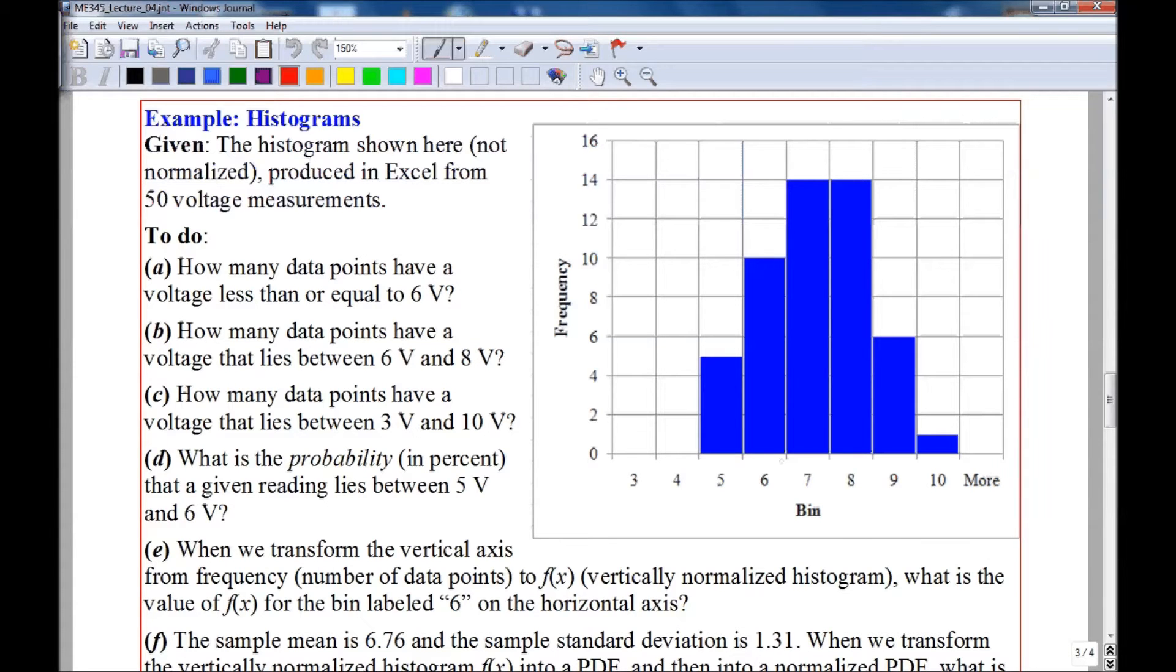Here's an example using histograms. I generated this histogram in Excel and I used just my own bins so that it has nice round numbers here at the bottom on the horizontal axis. Recall one problem with Excel is that these labels actually are shifted to the left.